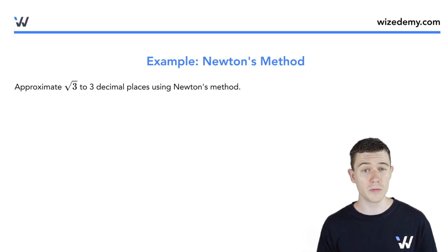We want to approximate square root of three using Newton's method. Now, Newton's method involves a function and its derivative, and we don't have a function here. All we have is square root of three.